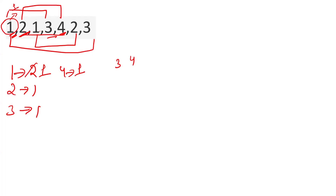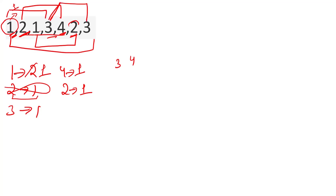For the third window, we remove the element 2. Its value in the hashmap is 1, so we simply discard that key entirely. But within this third window we encounter 2 again, so it gets re-added with value 1.